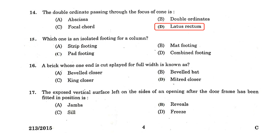Which one is an isolated footing for a column? Options: strip footing, mat footing, pad footing, combined footing. The answer is pad footing is an isolated footing for a column.